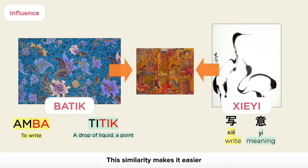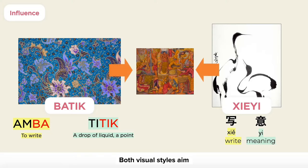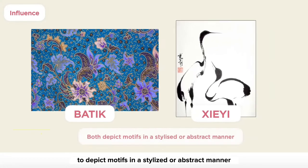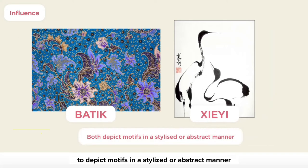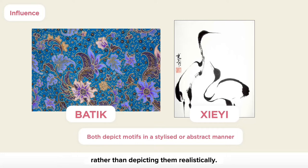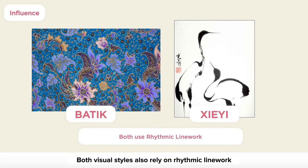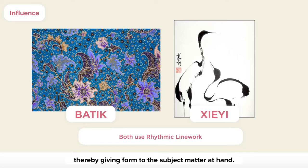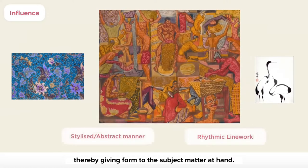This similarity makes it easier for the fusion of Chinese and Malay visual cultures. Both visual styles aim to depict motifs in a stylized or abstract manner, in order to capture the essence of the subject matter rather than depicting them realistically. Both visual styles also rely on rhythmic linework to suggest forms or delineate silhouettes, thereby giving form to the subject matter at hand.